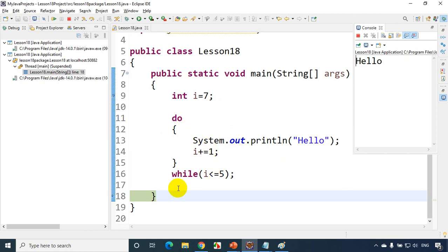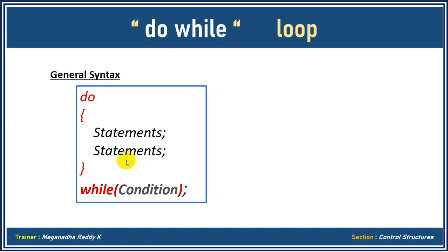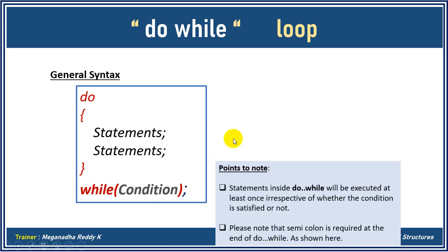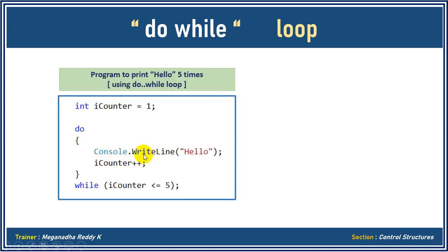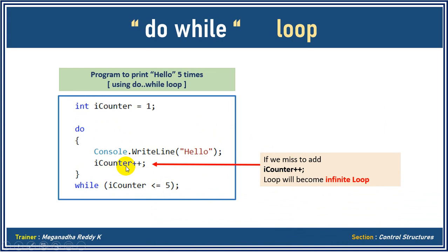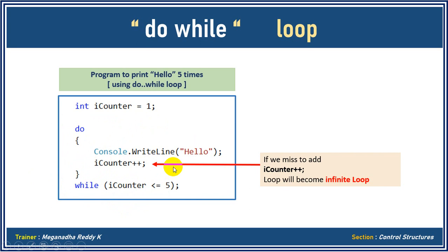Going back to the slides: the syntax for a do-while loop is 'do', then statements, then check for the condition with a semicolon at the end. Key points: statements inside a do-while loop will be executed at least once irrespective of whether the condition is satisfied, and the semicolon is required at the end of the do-while loop. Also note that if you forget to add the increment — like i++ — the loop will become an infinite loop, because the counter value never changes and the condition never fails.